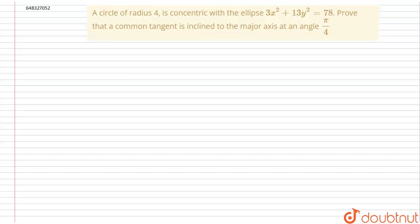The question is: a circle of radius 4 is concentric with an ellipse of equation 3x² + 13y² = 78. Prove that the common tangent is inclined to the major axis at an angle of π/4.